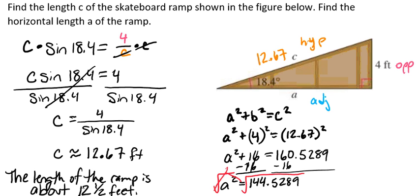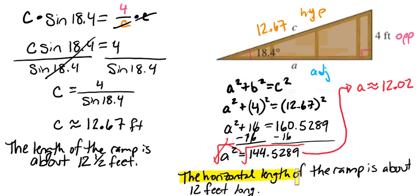From there, we're going to square root both sides. We only need the positive answer here because distance can't be negative. So we see that a is going to equal approximately 12.02 feet. And so here we're able to see that the horizontal length of the ramp is about 12 feet long. So we have our two answers where we solve for C and where we solve for A.